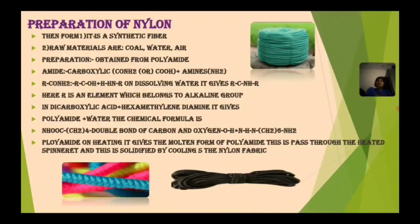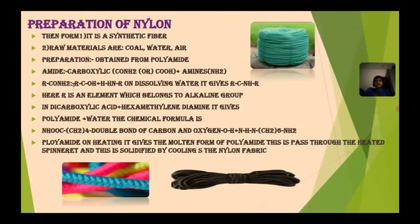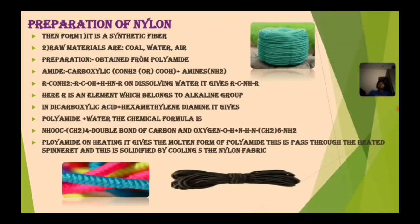Preparation of nylon: it is a synthetic fiber. Raw materials are coal, water, and air. It is obtained from polyamide. What is amide? Carboxylic acid — that is CONH₂ or COOH plus amines. The reaction is R–CONH₂ means R–C–OH plus H–NH–R. On dissolving in water it gives R–C–N–H–R. Here R is an element which belongs to the alkaline group, such as hydrogen, sodium, or potassium.